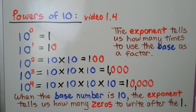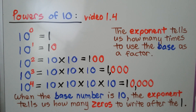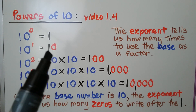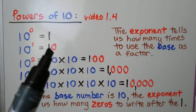We learned about powers of 10 back in video 1.4, which is linked in the description. The exponent tells us how many times to use the base as a factor. If we have 10 to the 0 power, we're going to use 10 as a factor 0 times — it's just equal to 1. If we have 10 to the first power, it's equal to 10; we're just using 10 as a factor one time.